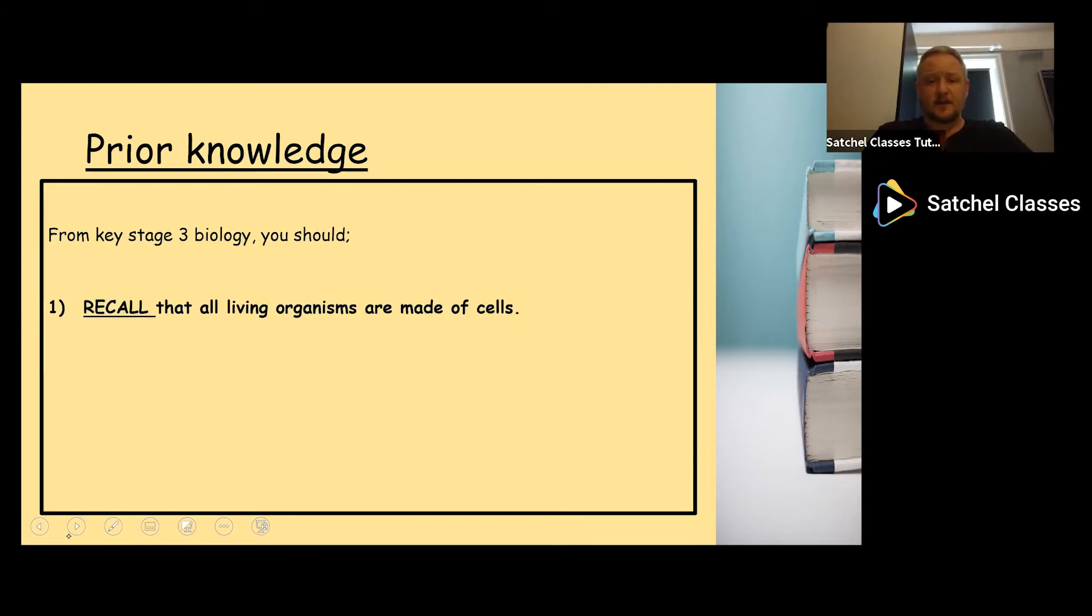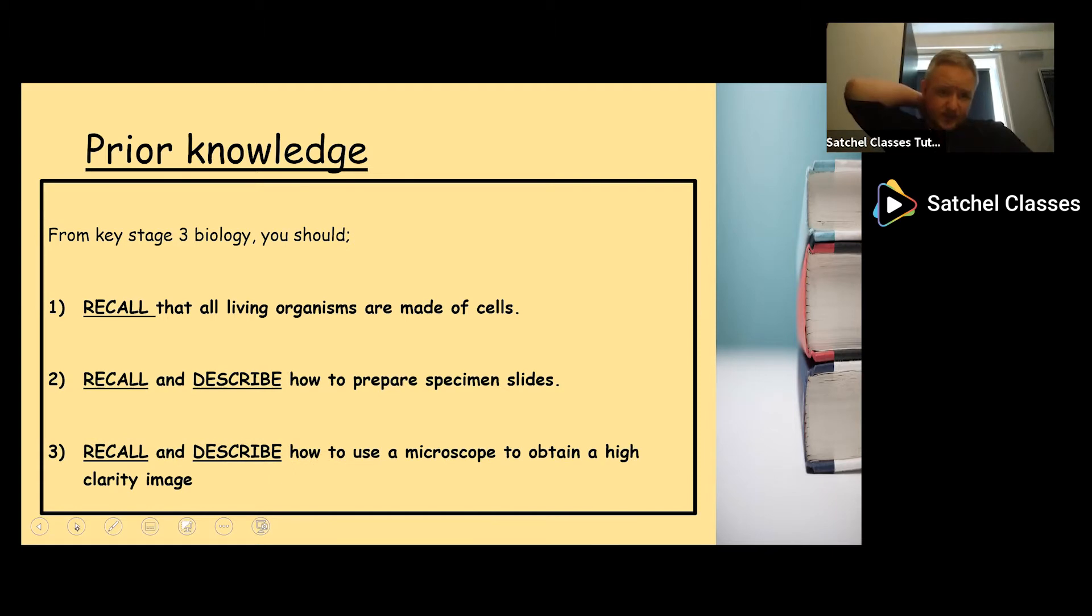Prior learning from Key Stage 3, what you studied in the past. You should recall that living organisms are made of cells. You should be able to recall and describe how to prepare specimen slides and how to use a microscope to obtain a high-clarity image. Bear in mind this is taught at Key Stage 3 but possibly not in as much detail as it is now.